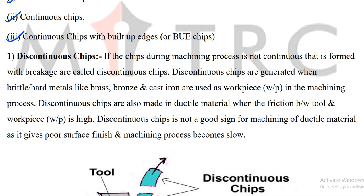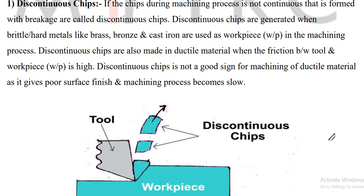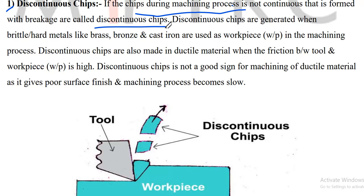In the discontinuous chip, if the chip during the machining process is not continuous — that is, it forms with breakage — it is called a discontinuous chip. The chip breaks at small lengths of material.